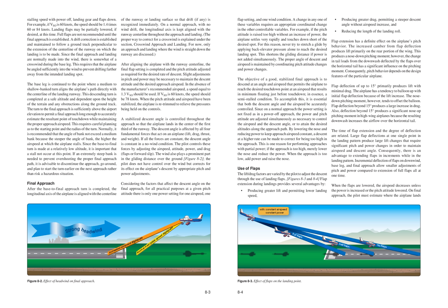Since on a normal approach the power setting is not fixed as in a power-off approach, the power and pitch attitude are adjusted simultaneously as necessary to control the airspeed and descent angle, or to attain the desired altitudes along the approach path. By lowering the nose and reducing power to keep approach airspeed constant, a descent at a higher rate can be made to correct for being too high in the approach. This is one reason for performing approaches with partial power. If the approach is too high, merely lower the nose and reduce the power. When the approach is too low, add power and raise the nose.